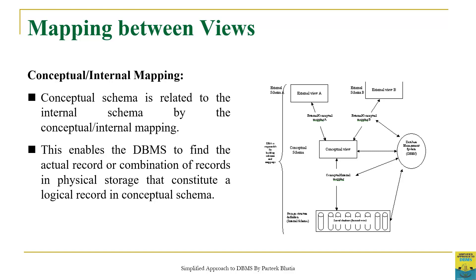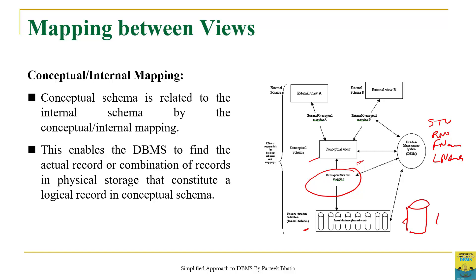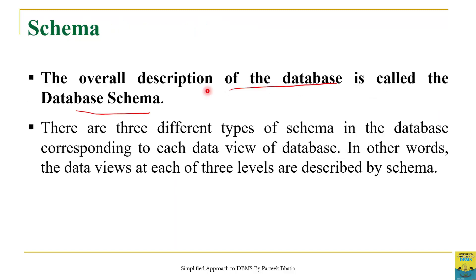We also have one more mapping called Conceptual-Internal Mapping. This is the mapping between the conceptual level and the internal level. As discussed, we have a student table with row number, first name, and last name. This table is physically stored on disk, which is placed at the internal level. The retrieval of this data from the hard disk is achieved by Conceptual-Internal Mapping. This enables the DBMS to find the actual record or combination of records from the physical storage.